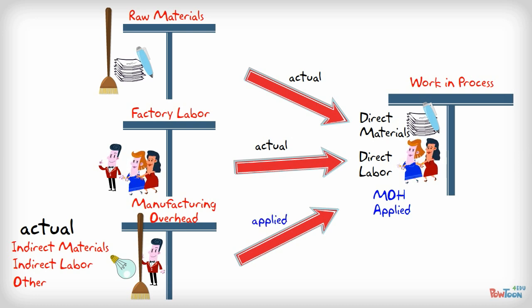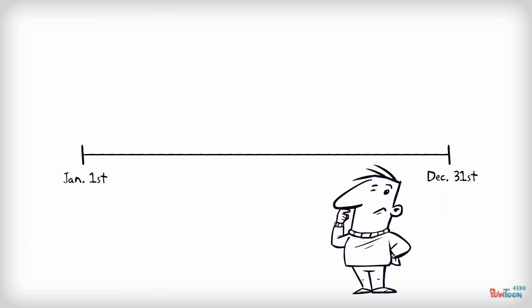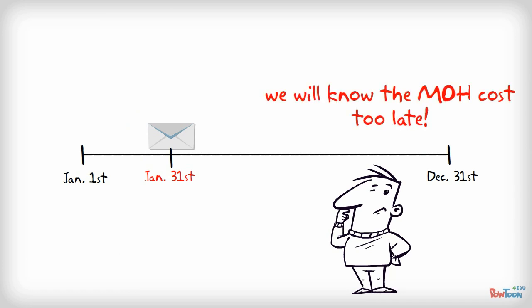The manufacturing overhead, however, is an applied amount. It is an estimate. Why is this an estimate? Because we want to apply the cost of manufacturing overhead before we sell the product. We do not want to underprice the product and lose money, or overprice it and not be competitive on the market. What if the envelope is finished on January 31st and we still don't have the manufacturing overhead cost? To know the actual manufacturing overhead cost we will need to wait until December 31st. Well that is too little, too late. Instead, why don't we make an estimate at the beginning of the year?